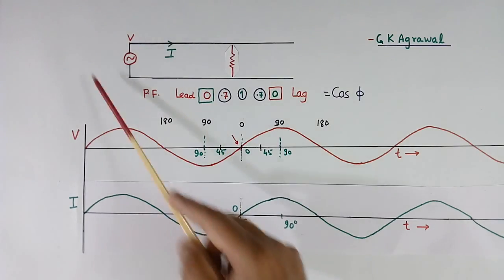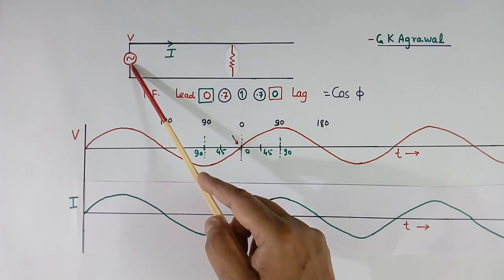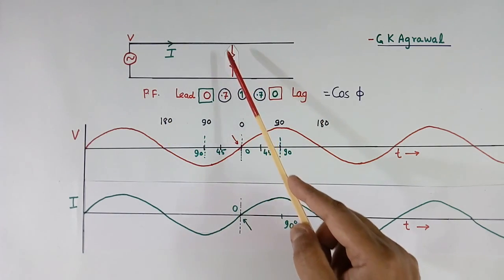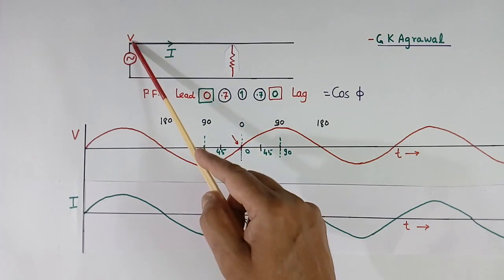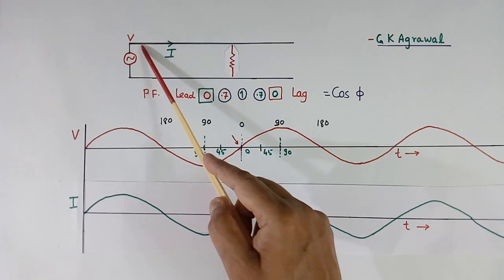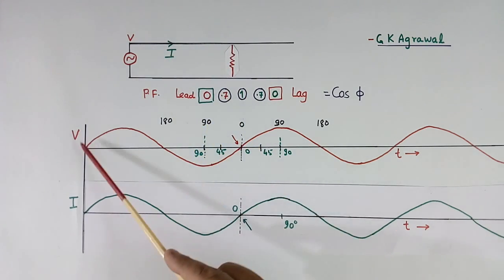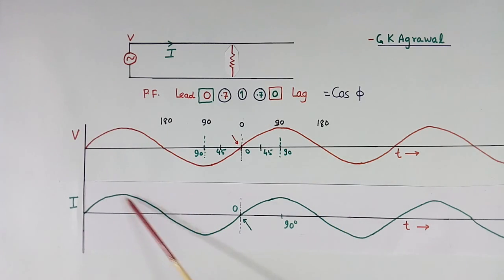This is a simple circuit with an AC supply and a resistive load. The voltage across this load is V and the current flowing is I. This is the wave shape of voltage, and this is the wave shape of current.